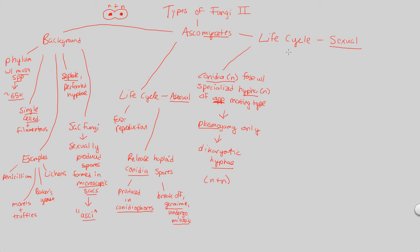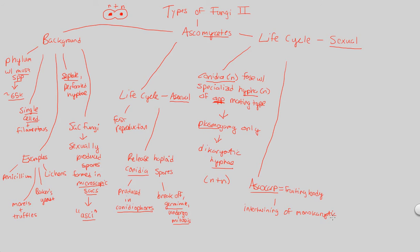Once that happens, what's next? We have to focus on something known as the ascocarp. The ascocarp is going to be the fruiting body of this structure — the fruiting body of an ascomycete. This is important because this is where we have an intertwining, a mixing and matching of monokaryotic and dikaryotic hyphae. Monokaryotic means just one set of genetic material, one nucleus, intertwining with dikaryotic N plus N hyphae.